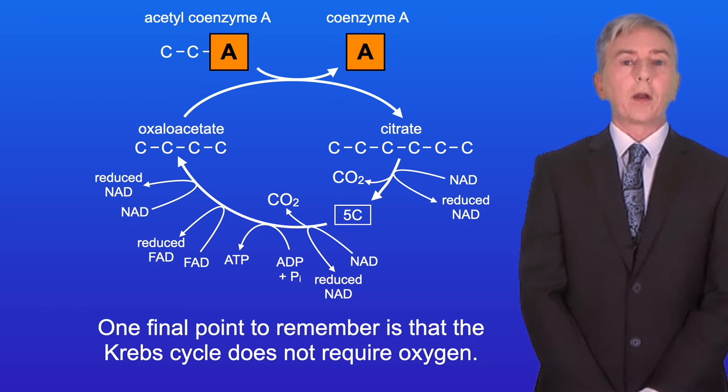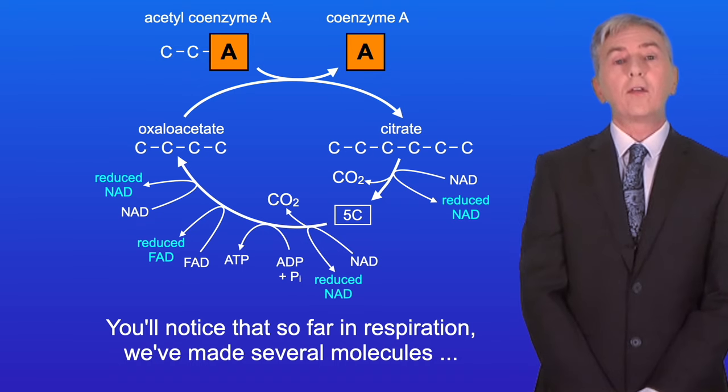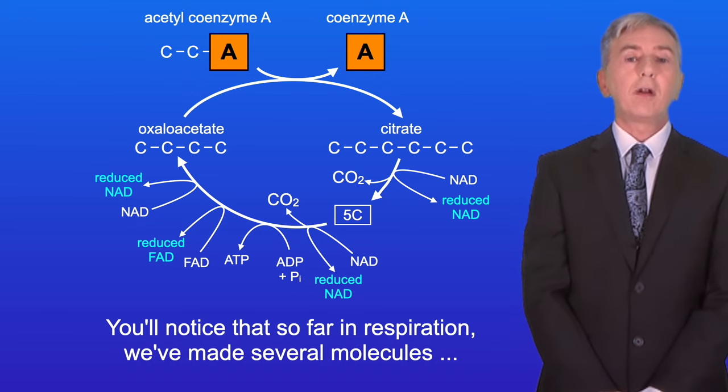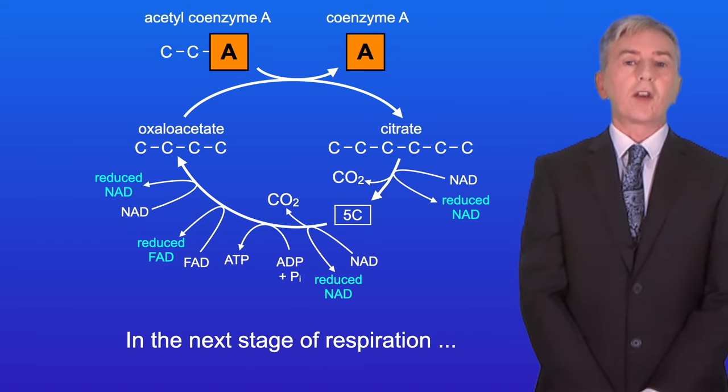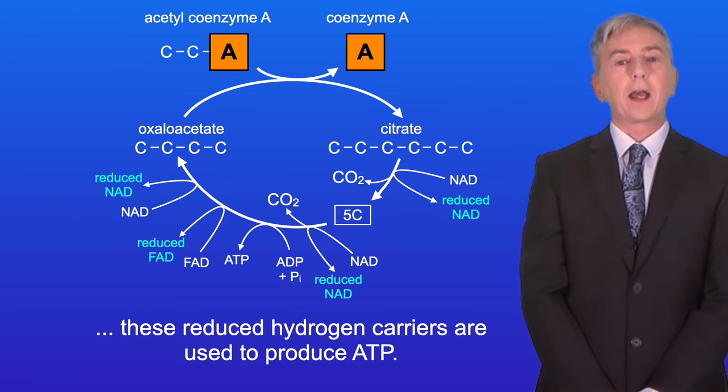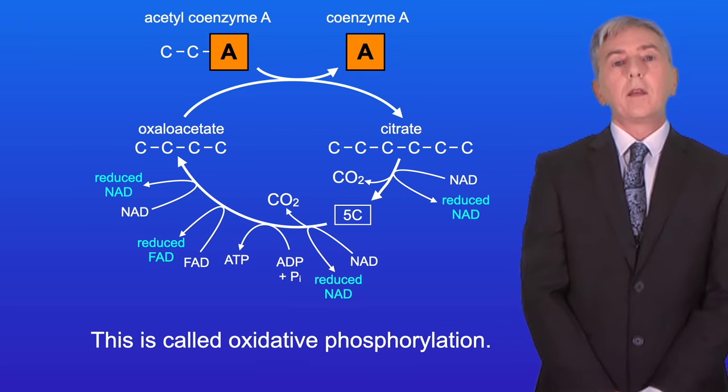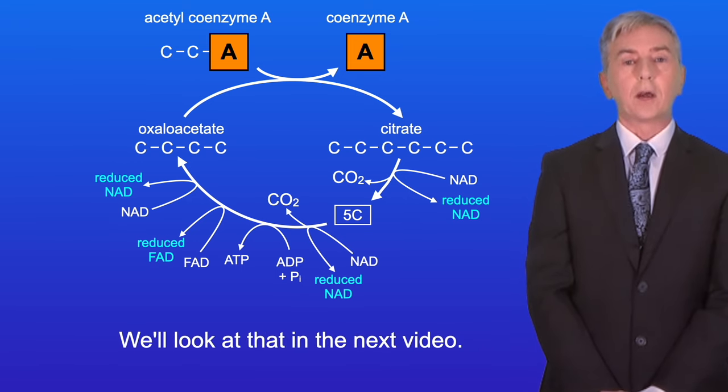One final point to remember is that the Krebs cycle does not require oxygen. Okay now you'll notice that so far in respiration we've made several molecules of reduced hydrogen carriers. In the next stage of respiration these reduced hydrogen carriers are used to produce ATP. This is called oxidative phosphorylation and we'll look at that in the next video.